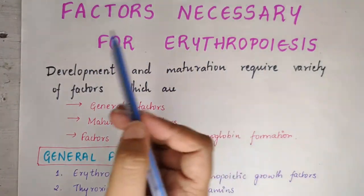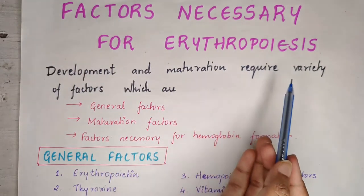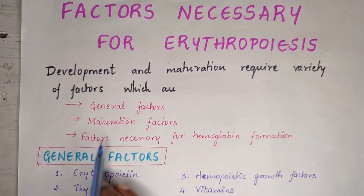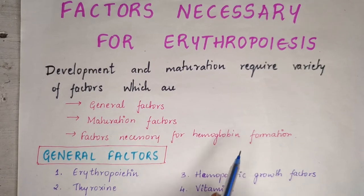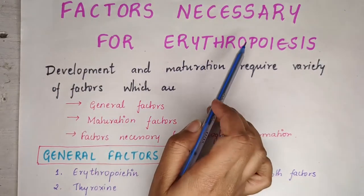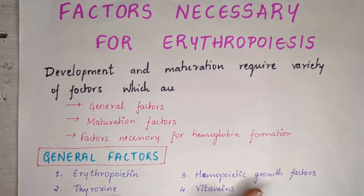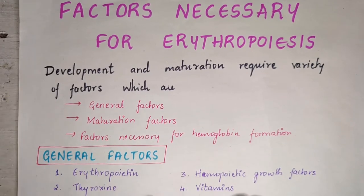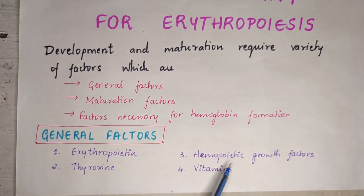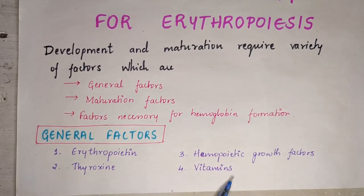The development and maturation of RBCs requires a variety of factors, such as general factors, maturation factors, and factors necessary for hemoglobin formation. Whenever RBC formation takes place, it needs important things to aid in the synthesis or production of erythrocytes. The general factors include erythropoietin, thyroxine, hemopoietic growth factors, and vitamins.